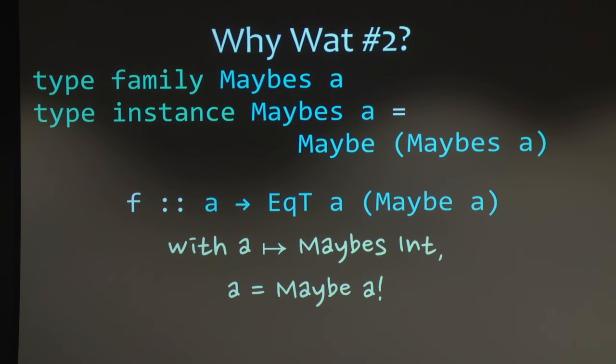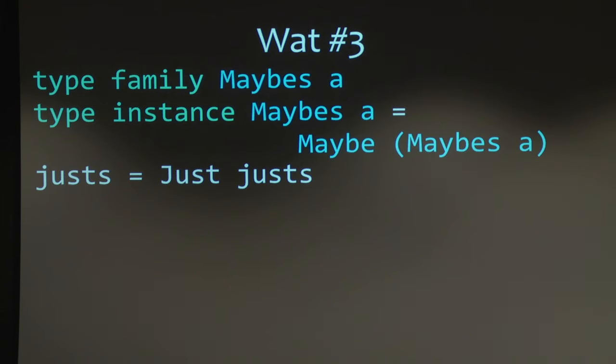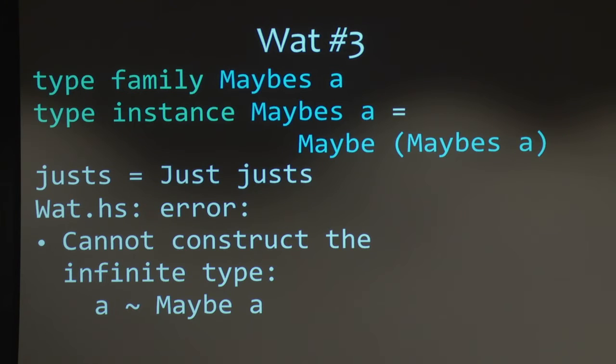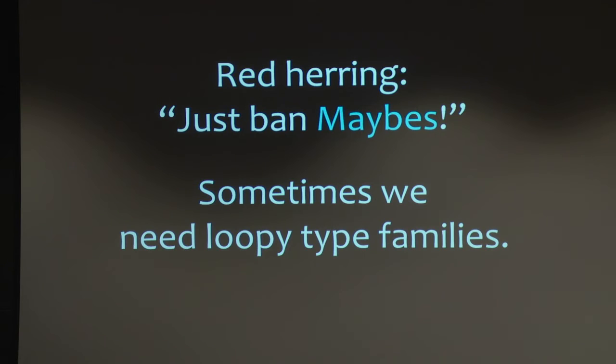So continuing with this maybes creature, we could imagine writing this at the term level. So let's think, what type would that have? Well, it would have to have a type that equals maybe of itself. But if we try to ask GHC, GHC gives us an error saying that we don't have infinite types such that a equals maybe a. But that's ridiculous. We clearly do. It's right up there on the screen. Right? So this is terrible. Why can't we just infer the type? It's right there. And so at this point, some of you are thinking, well, this language is ridiculous. Let's just get rid of this maybes construct and go home.